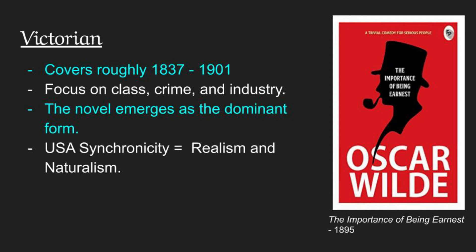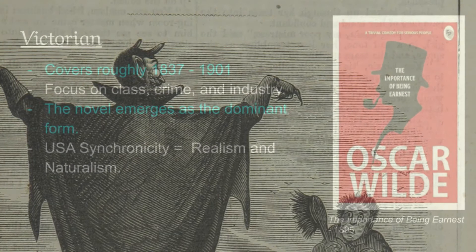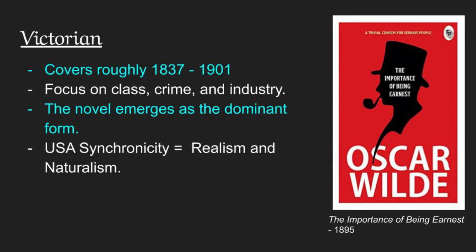There are also some good plays by Shaw — Pygmalion being a very famous one. And if none of those writers are familiar to you, chances are you've heard of Sherlock Holmes, who was also created and written at this time by Sir Arthur Conan Doyle. If you're thinking about what Victorian England was like, Sherlock Holmes is not a bad spot to start. In the United States at this time, we have realism and naturalism with writers such as Jack London and Stephen Crane.